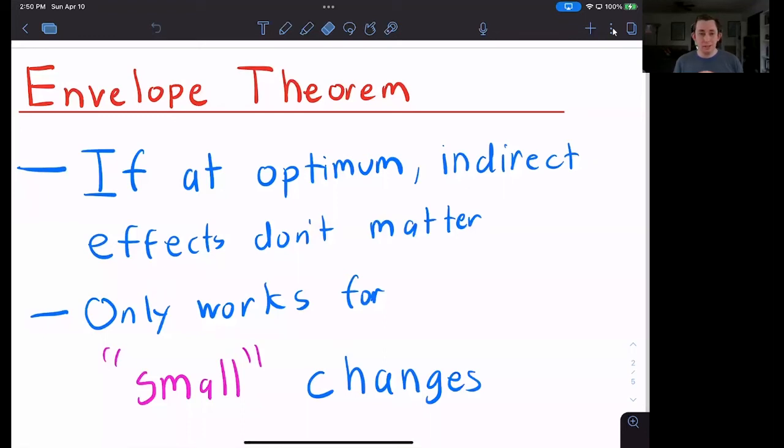Hi guys, welcome back to A Case of Econ Struggles. Welcome to another micro struggle. Today we're going to do a quick extension of what we just saw at the end of that envelope theorem video because that result that we got has a name. It's called Shepard's Lemma, so that is what we're going to talk about today.